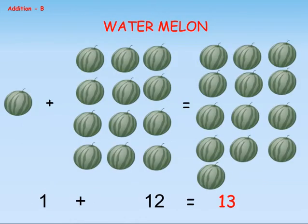1 watermelon plus 12 watermelons is equal to 13 watermelons.